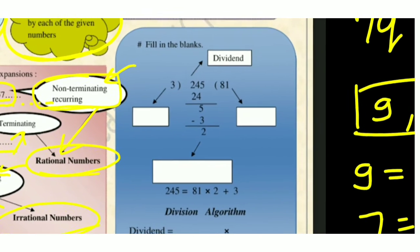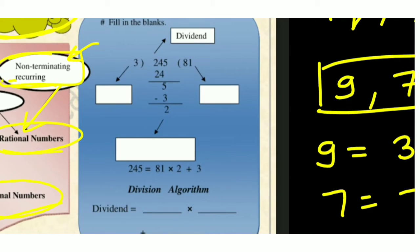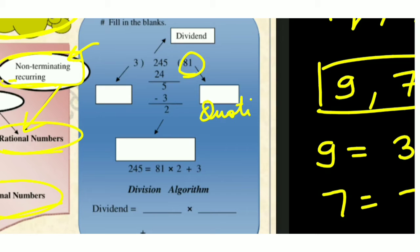The next concept is the Division Algorithm. In a division process, when you divide 245 by 3, it goes 81 times. Here 245 is the dividend, 3 is the divisor, and 81 is the quotient. The number left over — which is 2 — is called the remainder.